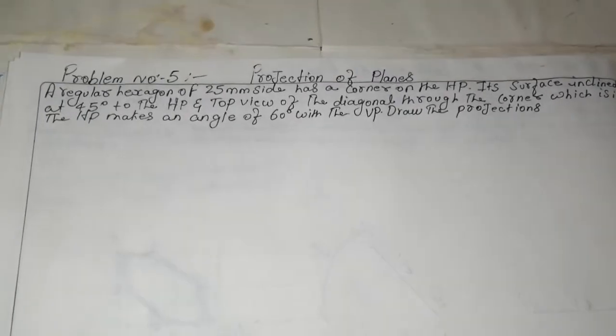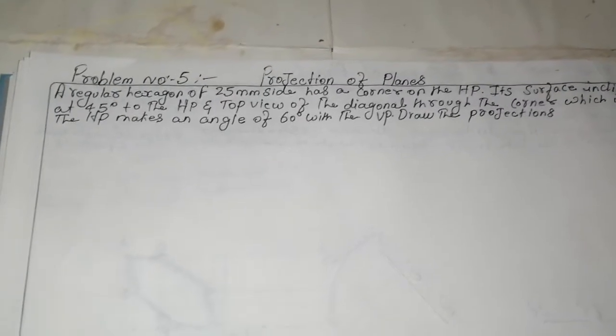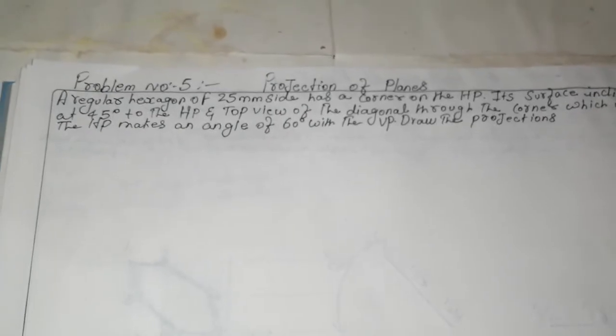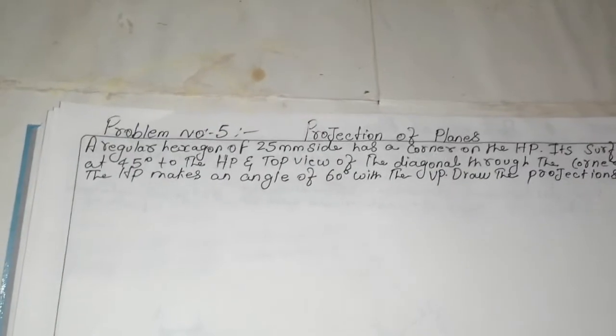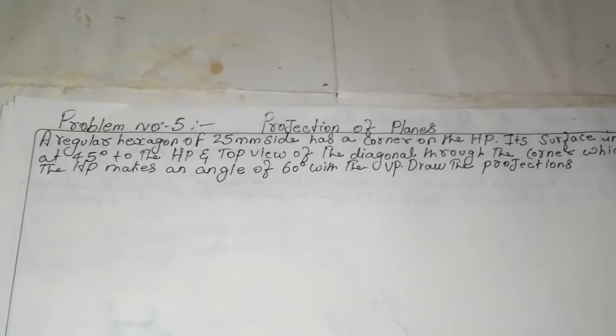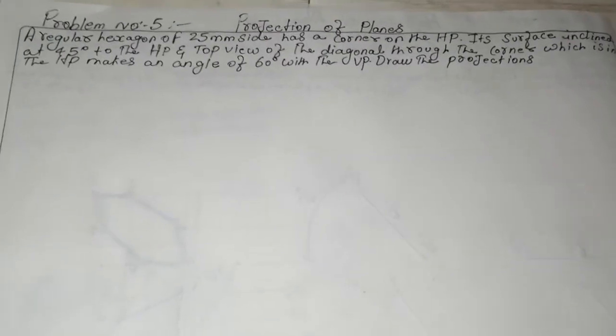Welcome to my channel MR Engineering Drawing for the Future 2020 for mechanical engineering students. The problem: find the projection of a plane — a regular hexagon of 20mm side — with a corner on the HP. Its surface is inclined at 45 degrees to HP, and the top view of a diagonal through the corner in HP makes an angle of 60 degrees with the VP. Draw the projection with the procedure.